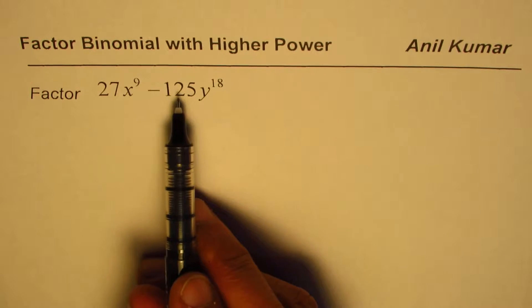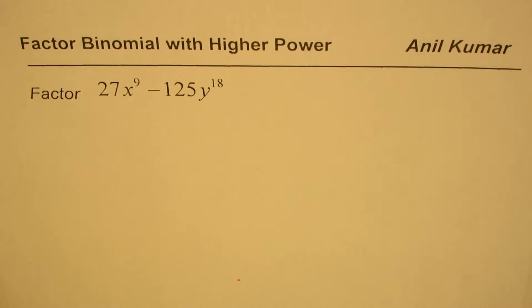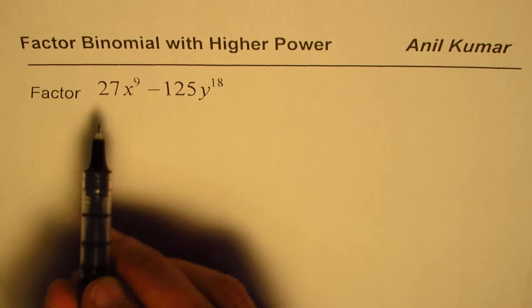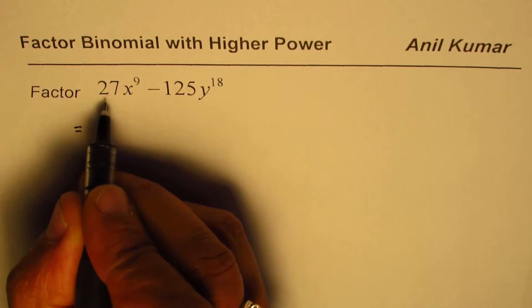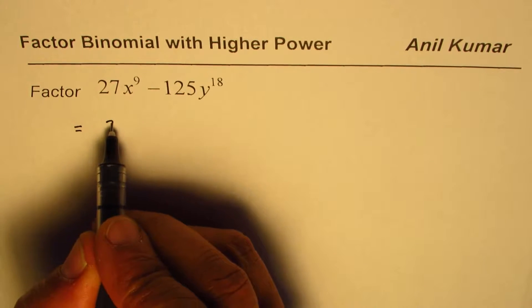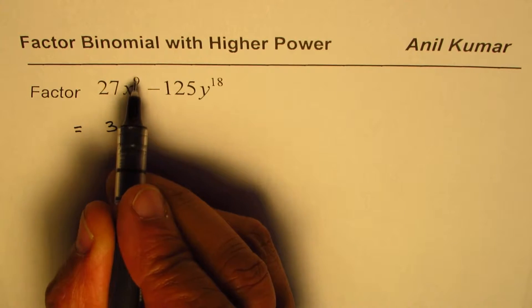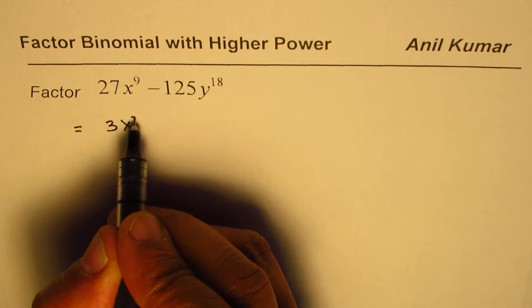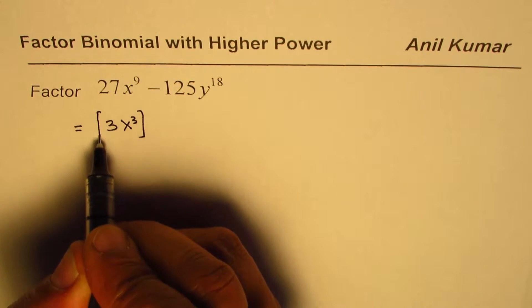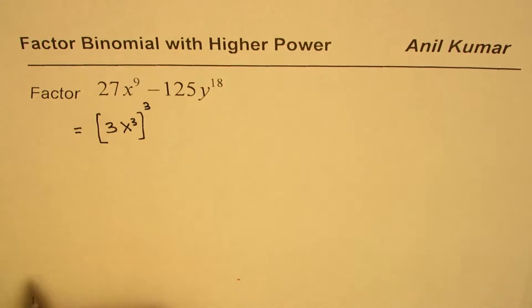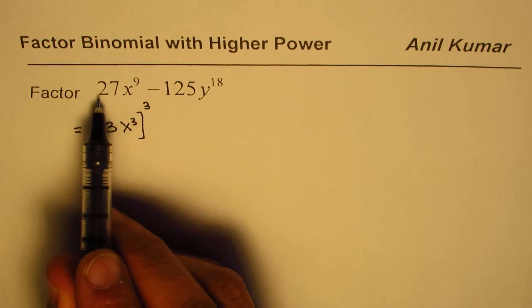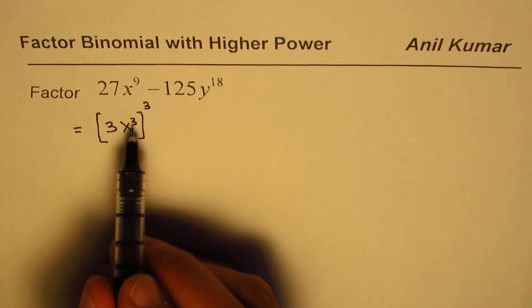As you can see, 27 is 3 cubed, right? So we can write x to the power of 9 as x cubed whole cubed. So we have the first term as a cube. 3x cubed whole cubed will make it 27x to the power of 9, since 3 times 3 is 9.